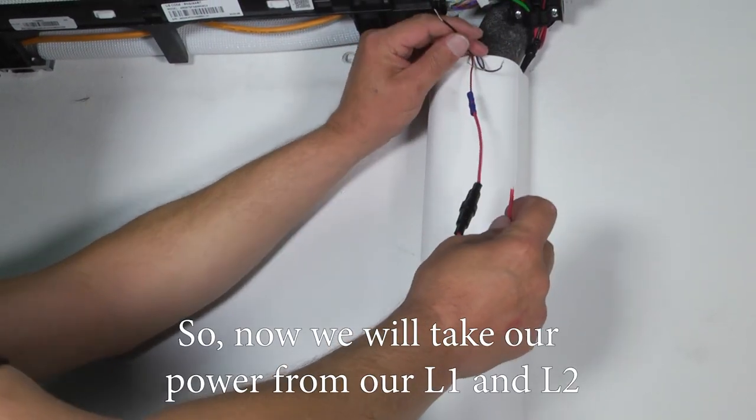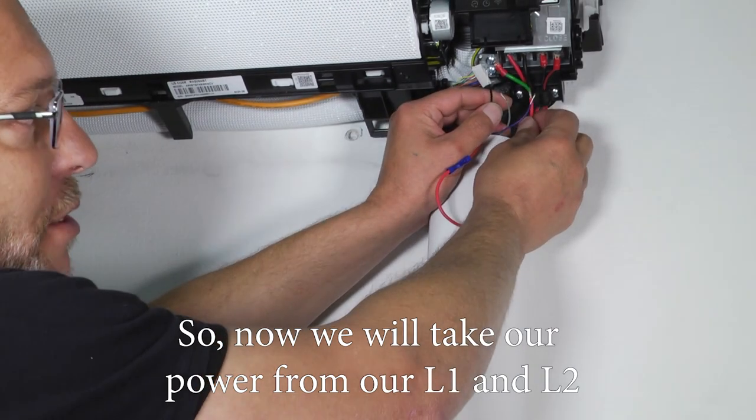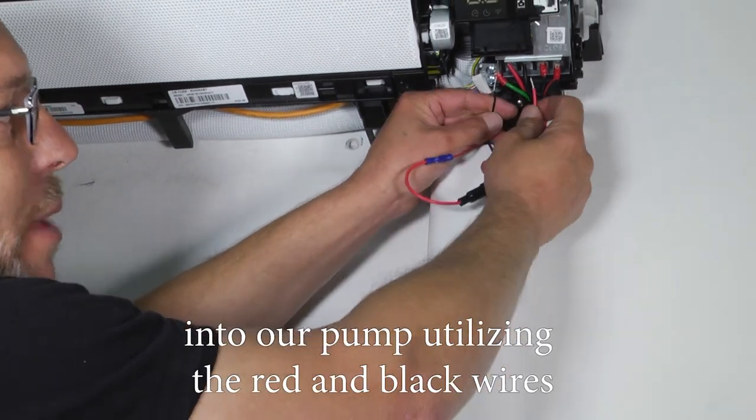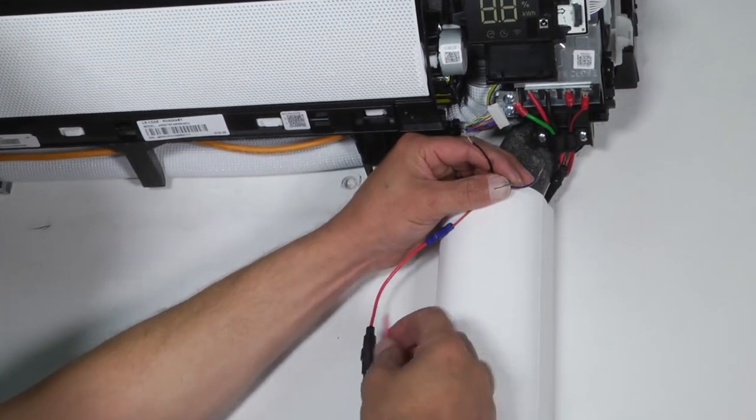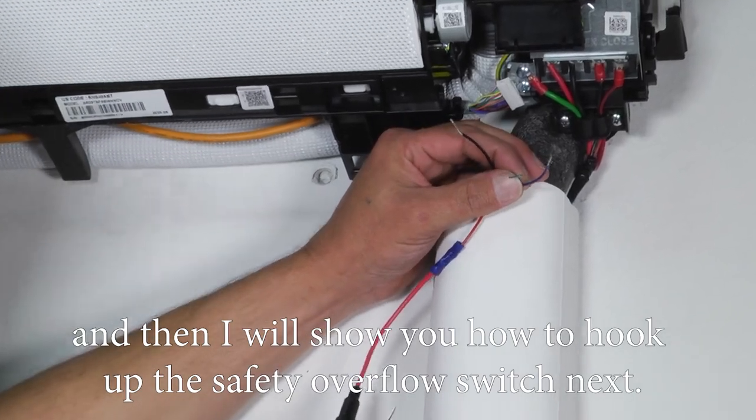So now we'll take our power from our L1 and L2 into our pump, utilizing the red and black wires. And then I'll show you how to hook up the safety overflow switch next.